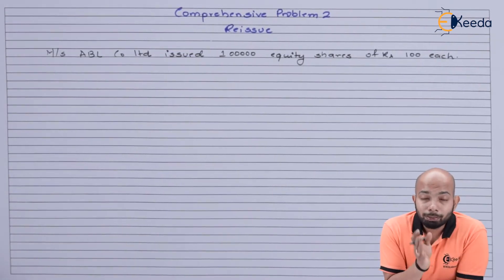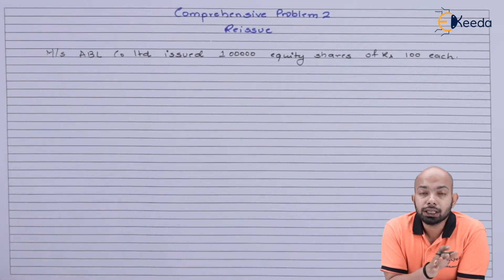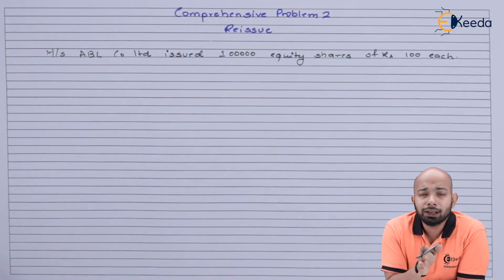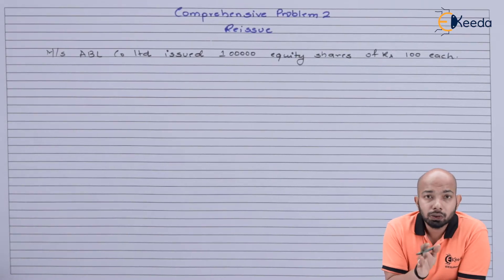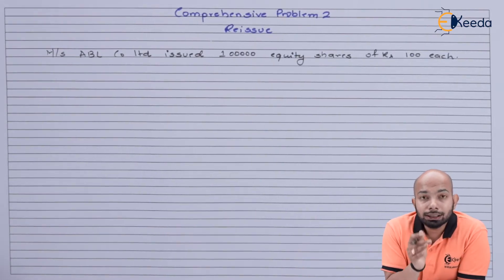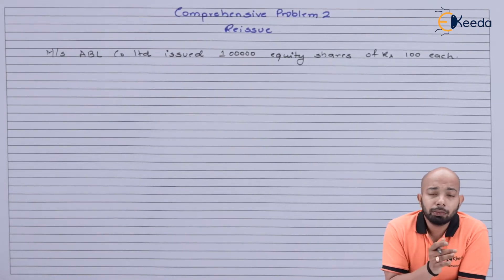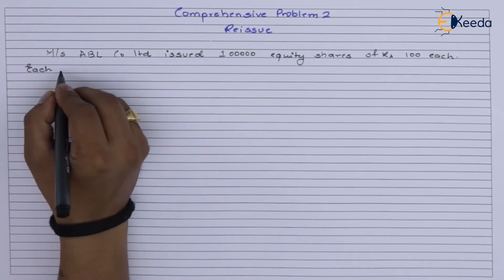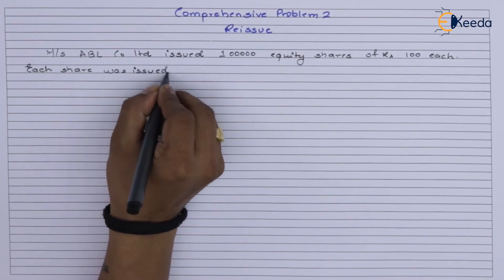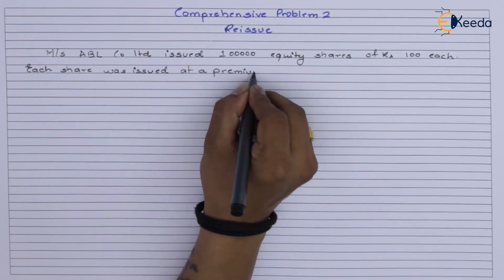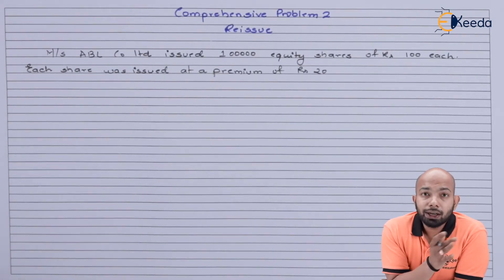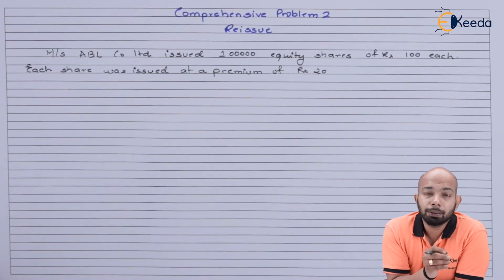The question is about ABL Company Limited, which issued 1 lakh equity shares of ₹100 each — giving a total capital of 1 lakh × 100 = ₹1 crore. This amount is payable in different parts: application, allotment, first call, and final call. Each share was issued at a premium of ₹20.